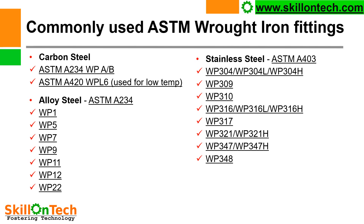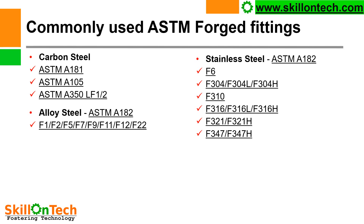Commonly used ASTM forged fittings: In carbon steel — ASTM A181, ASTM A105, ASTM A350 LF1, LF2. Alloy steel — ASTM A182 F1, F2, F5, F7, F9, F11, F12, and F20. In stainless steel — ASTM A182 F6, F304, F304L, F304H, F310, F316, F316L, F316H, F321, F321H, F347, and F347H. These are the forged fittings.